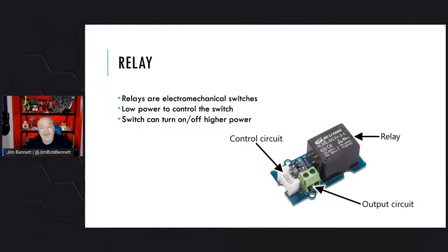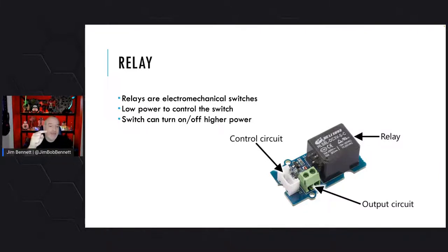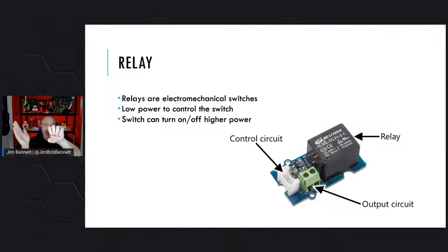The way we control a high-powered device from a low-powered device is with a thing called a relay. A relay is an electromechanical switch — it's like pressing a light switch, but rather than moving by chemical energy creating kinetic energy, it does it with a magnet. We use an electromagnet: when the magnet is charged up, a connection is made and electricity can flow. When the magnet is not charged, a spring pulls the relay back.